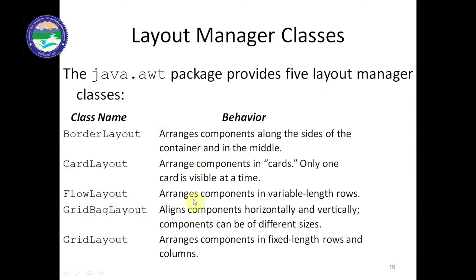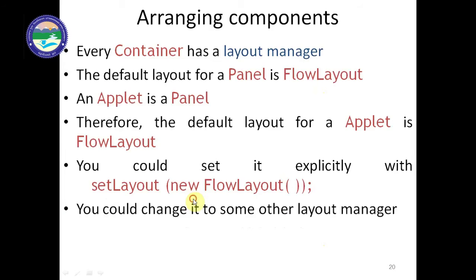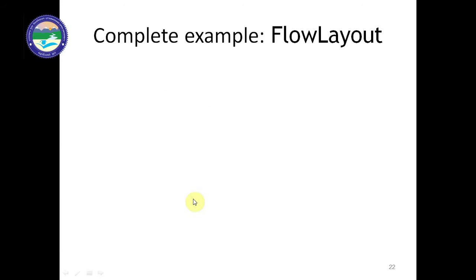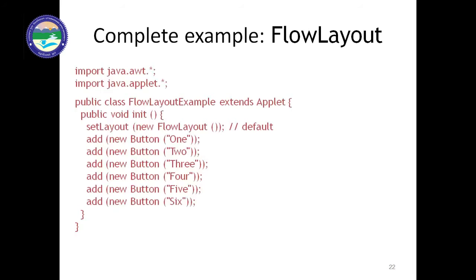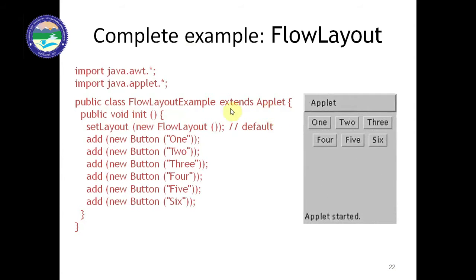Now let's look at the first example: flow layout. The class is public class FlowLayoutExample extending Applet. In the diagram, you can see different buttons arranged in a first line. When the first line is complete, it moves to the second line. Components are added and fixed line by line in this layout.